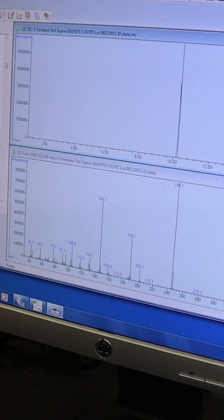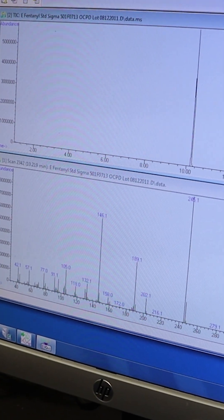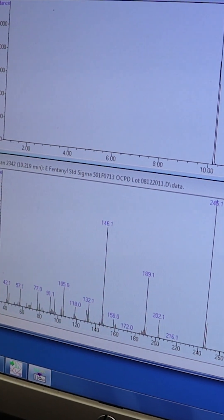It separates them based on size and polarity, and then it goes into the mass spec where it's bombarded with electrons and fragmented into little pieces. These are called the total ion chromatograph when they're graphed, and this is what we can use to identify the compounds.